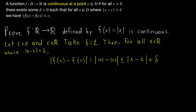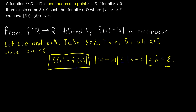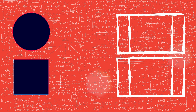So if we take delta equal to epsilon, then for all elements x of our domain where the absolute value of x minus c is less than delta, the absolute value of f of x minus f of c equals the absolute value of |x| minus |c|, which is less than or equal to the absolute value of x minus c by the reverse triangle inequality. We know that this is less than delta, and delta equals epsilon. So the absolute value of f of x minus f of c is less than epsilon for all elements of our domain within delta of the chosen point c. And so we've proven that the absolute value function is continuous on the real numbers.